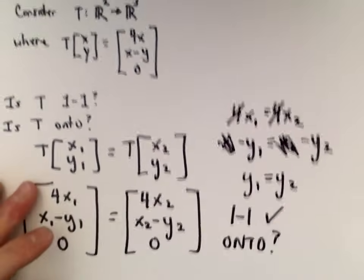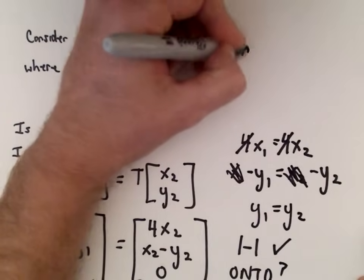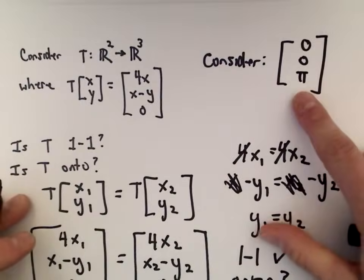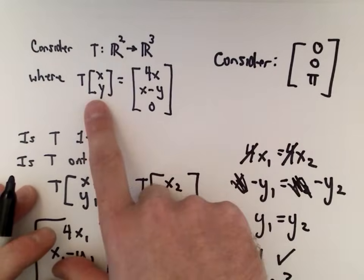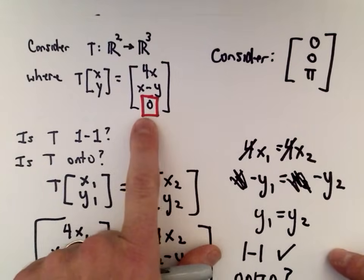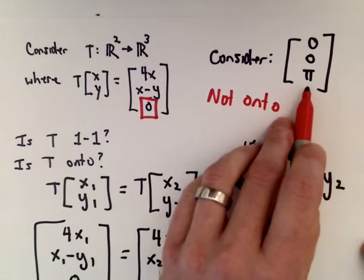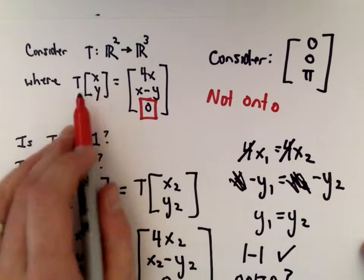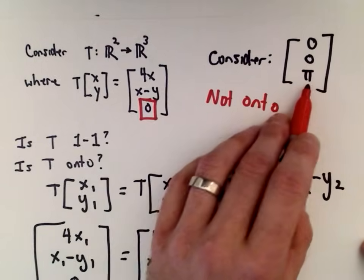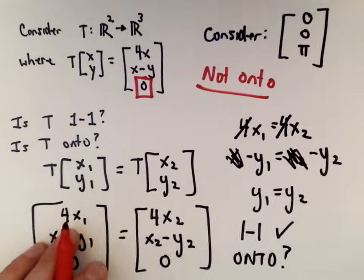Now, is it onto? This one is easy — it can't be onto. Consider the vector (0, 0, π) in ℝ³. By definition, this transformation always produces a last component of 0 no matter what input you start with. So vectors in ℝ³ with a nonzero last component — like (0, 0, π) — can never be reached. This transformation is therefore not onto.